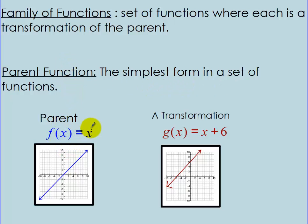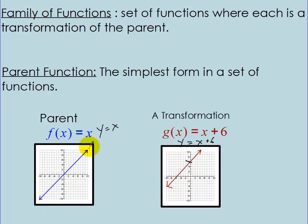So here, f(x) equals x is the same thing as saying y equals x — that's just a line. A transformation of that parent is the function g(x) equals x plus 6, which is like saying y equals x plus 6. What happened with this line is it moved up a little bit — the y-intercept is at 6. So it's still a line, just like the parent function, but it's been transformed and moved around. They're still part of the same family of functions, but they're different functions.